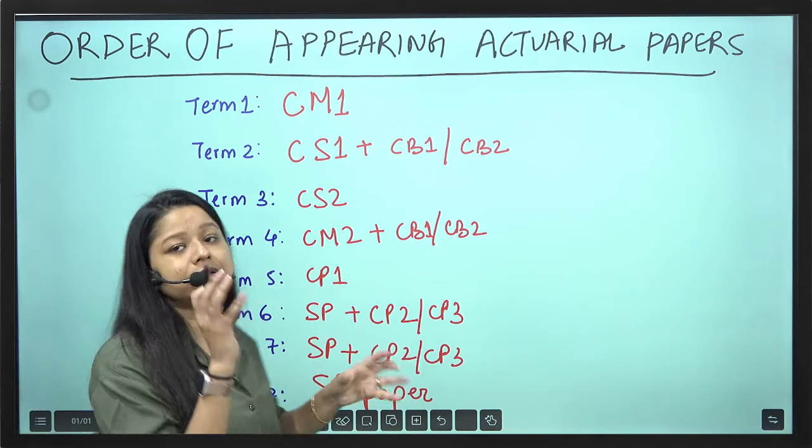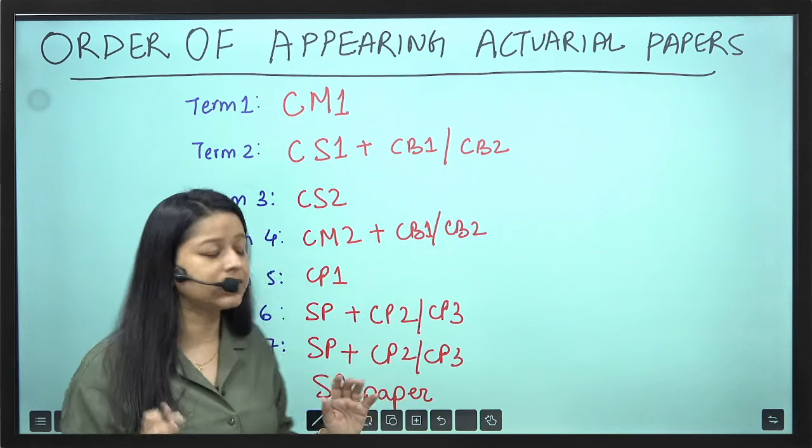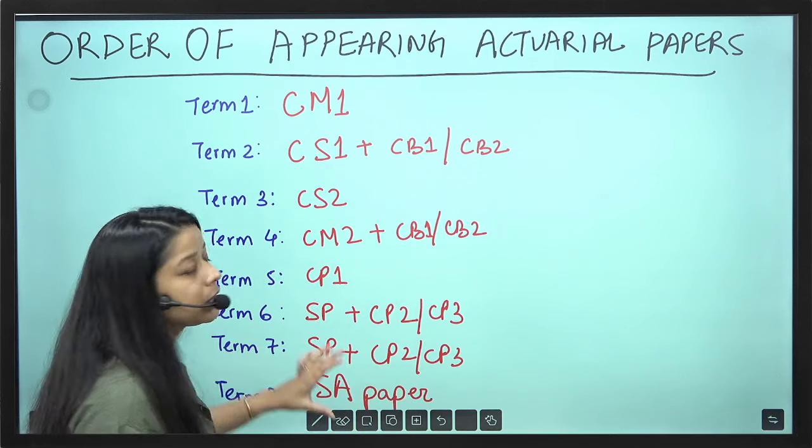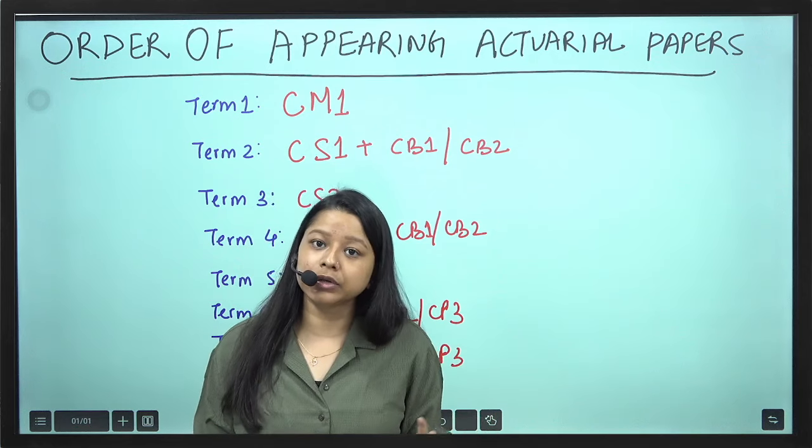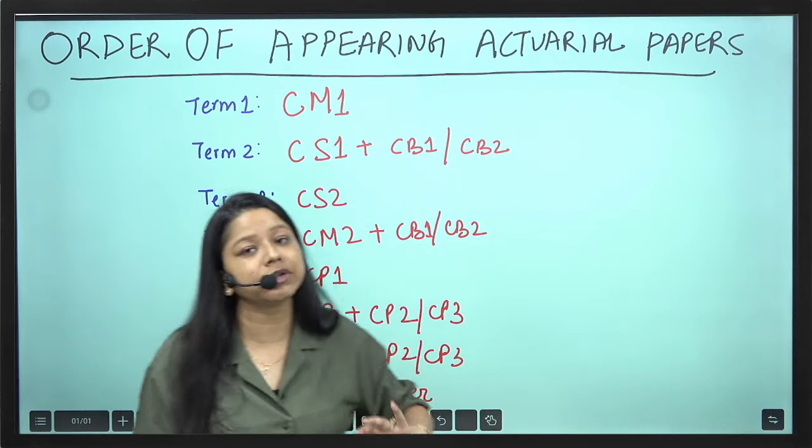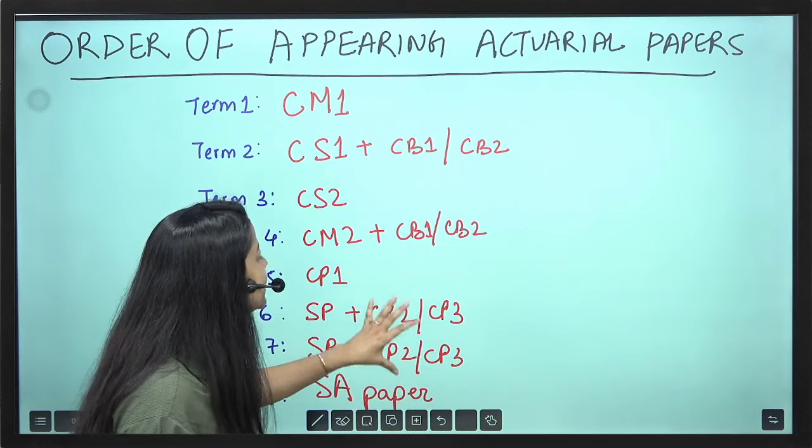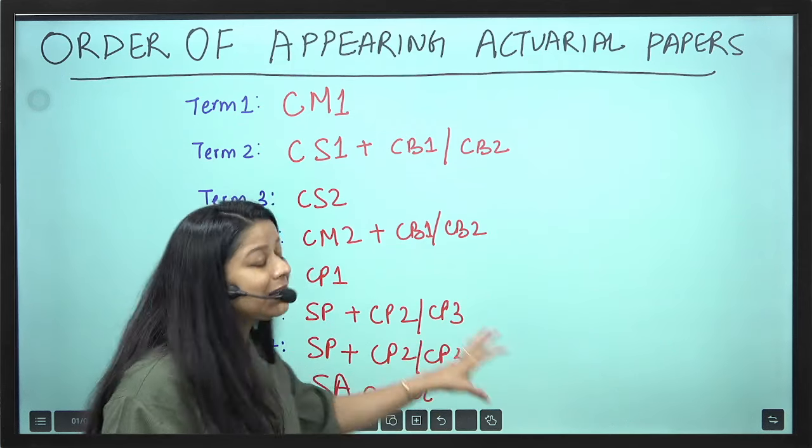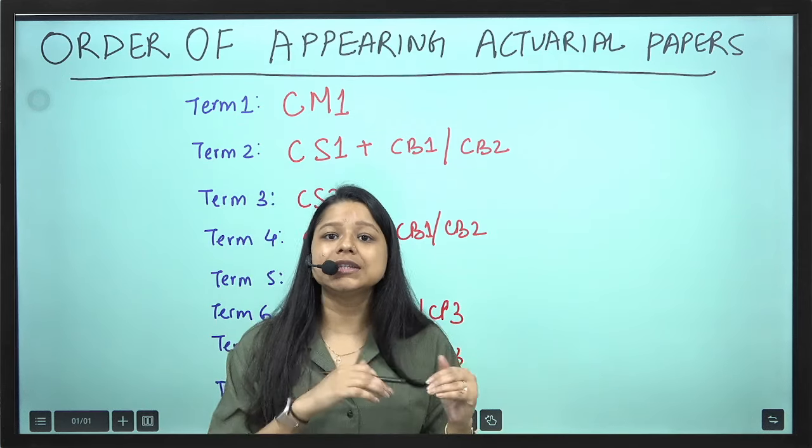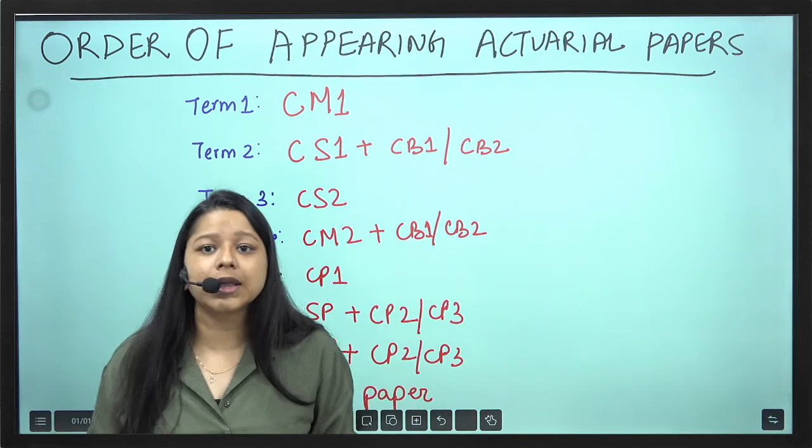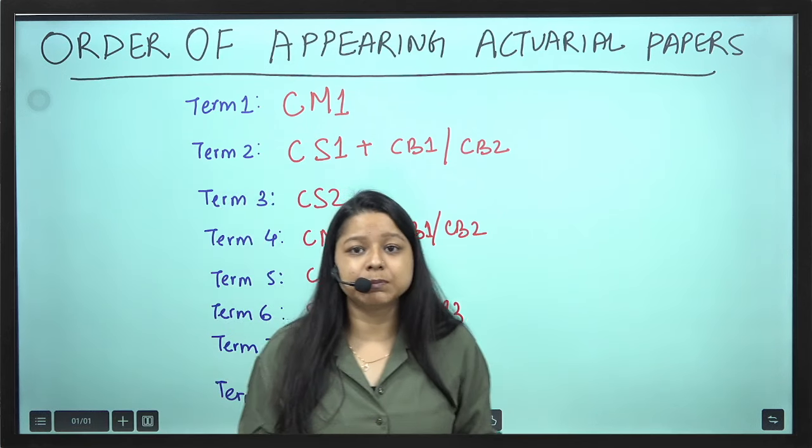CP1 is somewhere around 300 hours of study. SP level papers will generally need 200 plus and SA papers will generally need 200 plus hours of study, 200 to 250 hours, whereas CP2 is around 75 hours, CP3 is around 50 hours. These are the basic study timelines for all these papers.